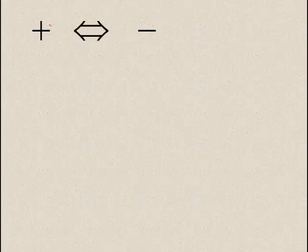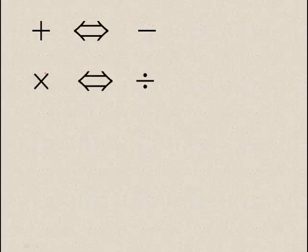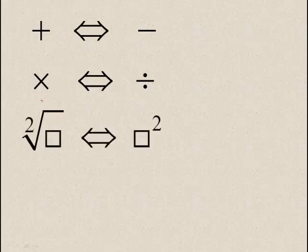The very simple rule I am going to be using is: whenever I move a positive over the equal sign to the other side of the equation, a positive will become a negative. A negative will become a positive as soon as it hops over the equal sign. A multiplication becomes division, or division becomes multiplication. If I have a square root and I move it over the equal sign to the other side of the equation, a square root becomes a square.